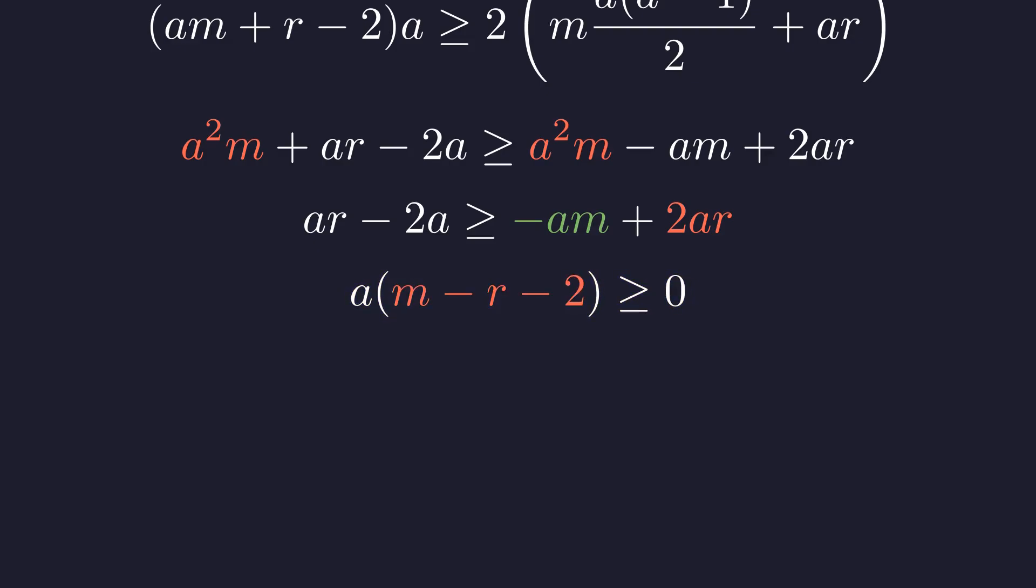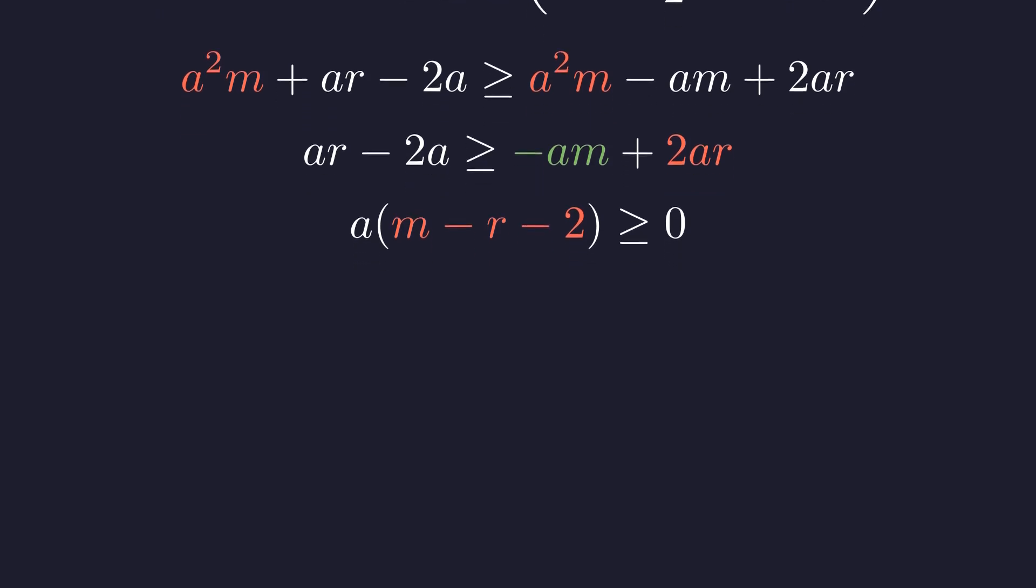This is the moment where all our hard work pays off. Since a is non-negative, we have two cases to consider: if a is 0, meaning m is bigger than n, then our original inequality becomes 0 greater than or equal to 0, which is trivially true. The interesting case is when a is at least 1, because then we need m minus r minus 2 to be non-negative.